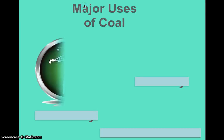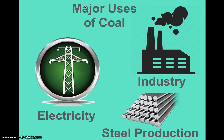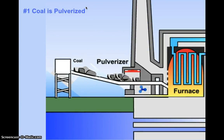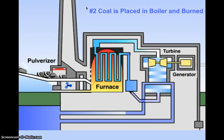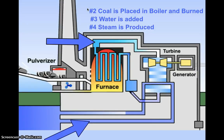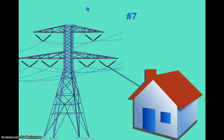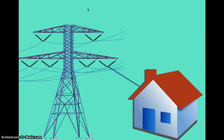The main use of coal is to produce electricity, and the second main use is in industry, mainly for the production of steel. Coal is taken to the plant where it is first crushed or pulverized. It then goes into a boiler or furnace and is burned. Water from a nearby river, ocean, or major body of water is added, turning into steam. That steam spins a turbine, which is attached to a generator, sending electric current to your home.